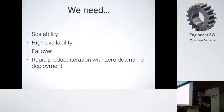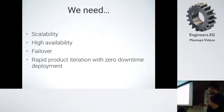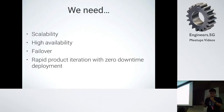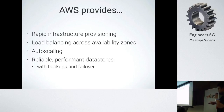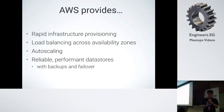So how do we make an application like Py? We need basically all the regular things you need for a reliable, high-availability chat application — also failover and rapid product iteration with zero downtime deployments. AWS provides all these things: rapid infrastructure provisioning, load balancing across different availability zones, auto-scaling with reliable and performant data stores, and backups and failover as well.